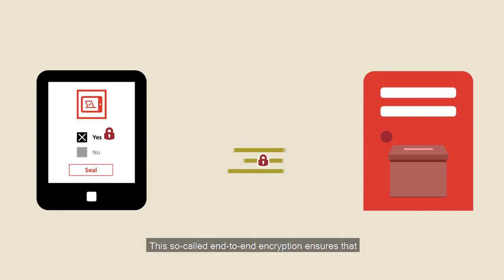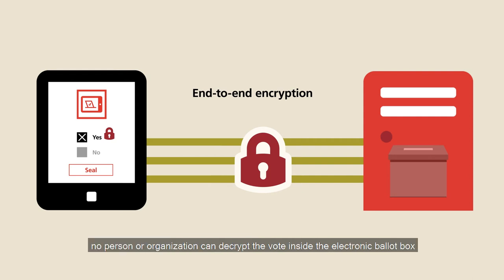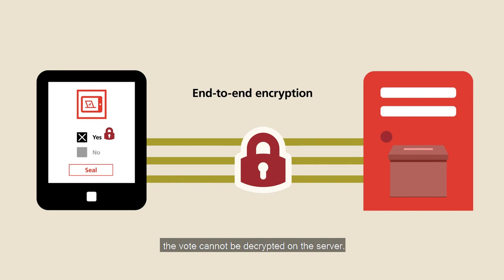This so-called end-to-end encryption ensures that the vote is encrypted on the voter's device. No person or organisation can decrypt the vote inside the electronic ballot box, or on its way to the ballot box. The vote cannot be decrypted on the server.